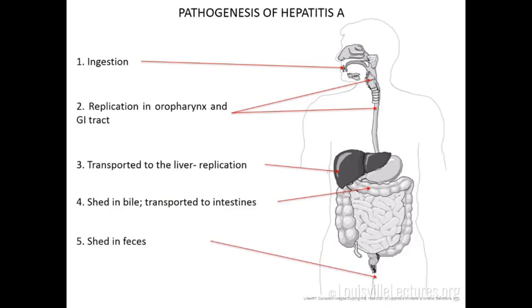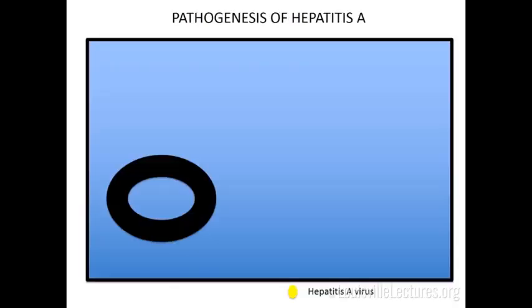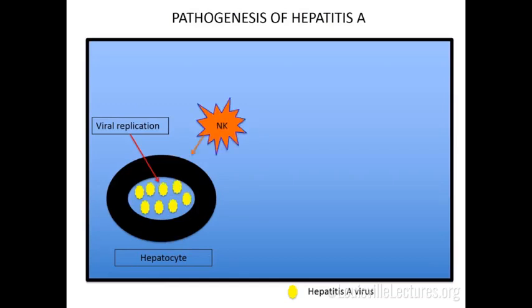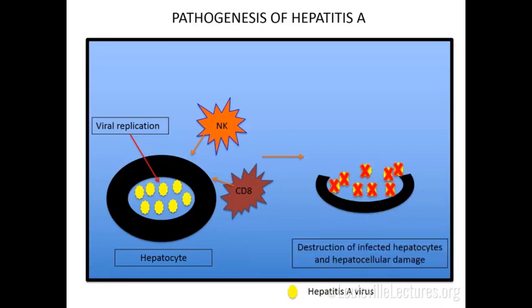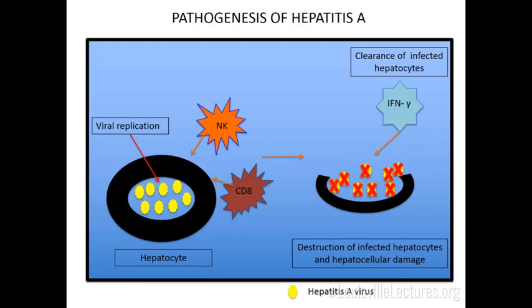Then you have viremia, immune response, symptoms, and resolution. At a cellular level, viral replication occurs in the hepatocyte, natural killer cells and CD8 cells are alerted and destroy the virus, but in the process there is also destruction of the infected hepatocyte and hepatocellular damage. Interferon gamma has a role in clearing infected hepatocytes. The more robust your immune response, the more damage you'll have, and the more symptomatic you'll be.